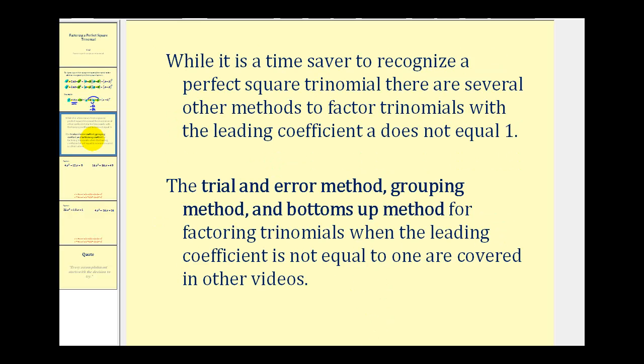While this formula is a time saver, there are several other methods to factor trinomials with a leading coefficient not equal to one. I have several other videos that talk about the trial and error method, the grouping method, and a method called bottoms up. So while if you do recognize this pattern it will save you some time, there are other ways to factor these types of problems.